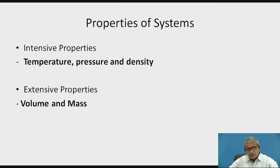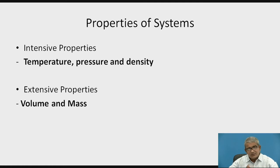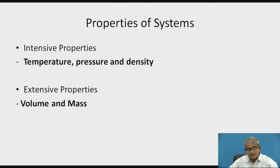A simple example for intensive property: consider a room where pressure P is present. If that room is divided into two parts, the pressure remains the same in room one and room two. Previously, the gas in that room had pressure P, volume V, temperature T, and density rho. If the room is now divided into two parts, those values are not changed — they are not related to the mass or quantity of that system. These are called intensive properties.